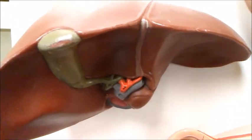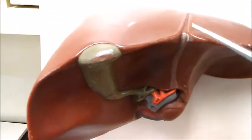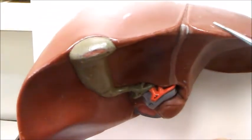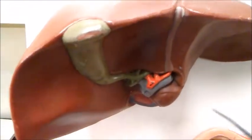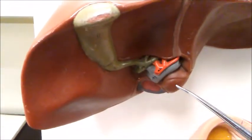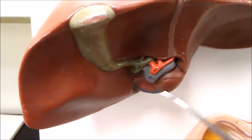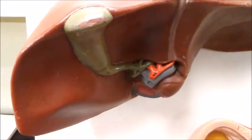The liver is divided into lobes. There are two major lobes - the left lobe and the right lobe - and there are two minor lobes shown here.